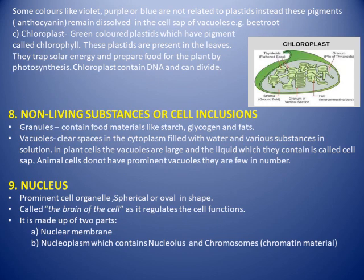The nucleus is the brain of the cell — a prominent, spherical or oval organelle that regulates all cell functions. It is made up of two parts: the nuclear membrane (or nuclear envelope), which is the covering of the nucleus, and the nucleoplasm — a gel-like substance inside containing the nucleolus and the chromosomes (also called chromatin material).